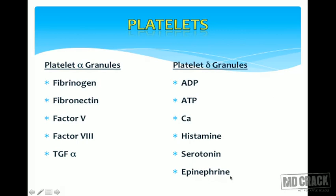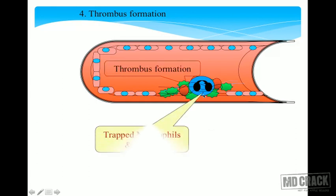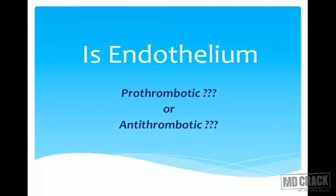So many things are released once platelets are activated and start secreting their granules. In tertiary hemostasis, the thrombus that is formed — an entangled mesh of platelets along with trapped RBCs and WBCs — will later be removed by the fibrinolytic system.